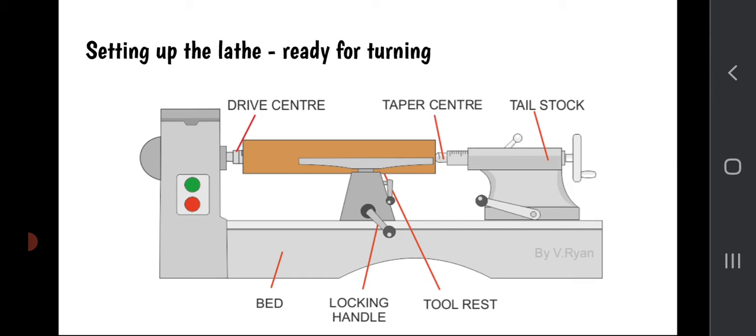Here is the lathe ready for turning. You can see the material in brown sandwiched between the drive center and the tapered center. Other parts of the lathe include the tool rest which we rest the tools upon, the various locking handles, the tail stock, and the beds that the whole thing sits on.